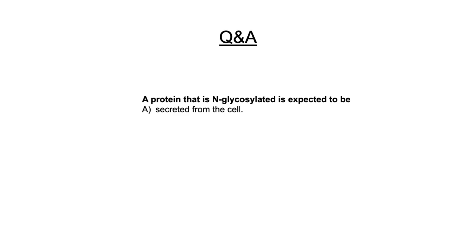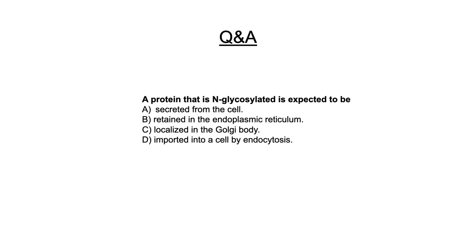Knowing about N-linked glycosylation leads us to another quiz question: a protein that is N-glycosylated is expected to be — a) secreted from the cell, b) retained in the ER, c) localized in the Golgi body, d) imported into a cell by endocytosis, or e) a peroxisomal enzyme. It's not secreted from the cell, as we discussed that glycoproteins are used for immunity and within the plasma membrane. It's not retained in the ER, not localized in the Golgi, and not imported by endocytosis since it's already produced within the cell. Therefore it is used as a peroxisomal enzyme — which is notably not part of the endomembrane system.